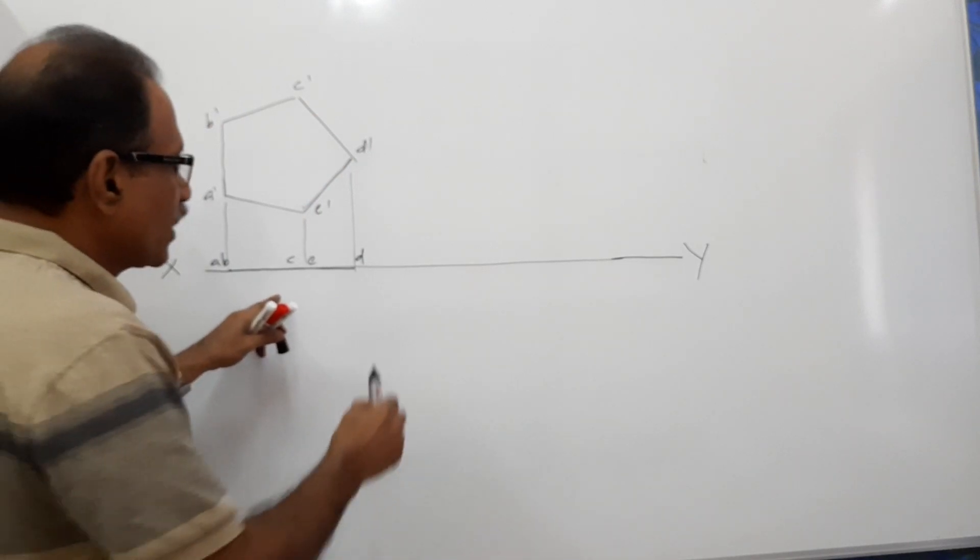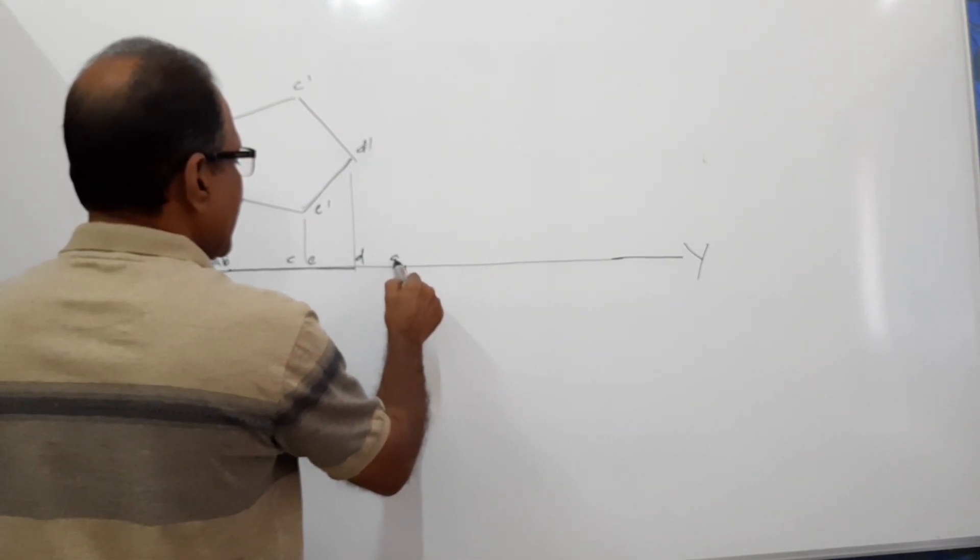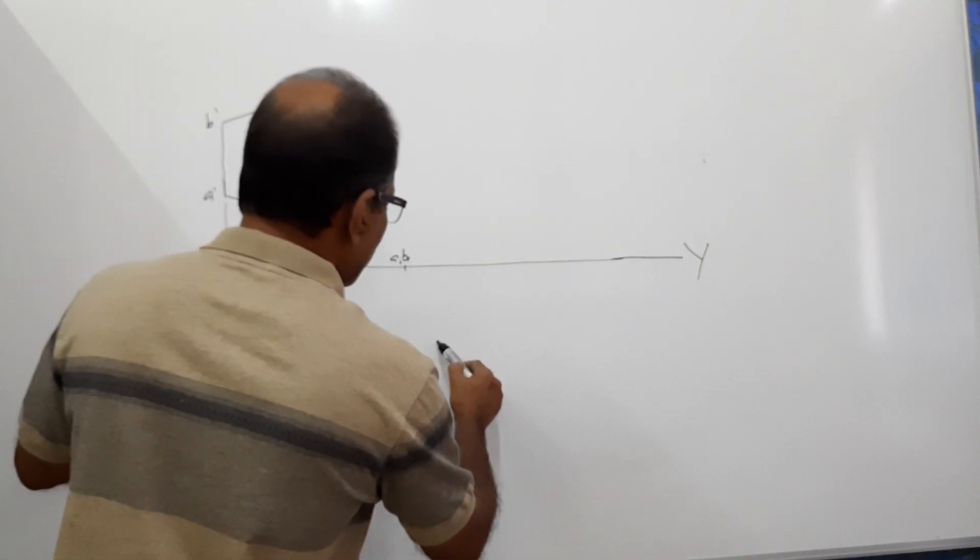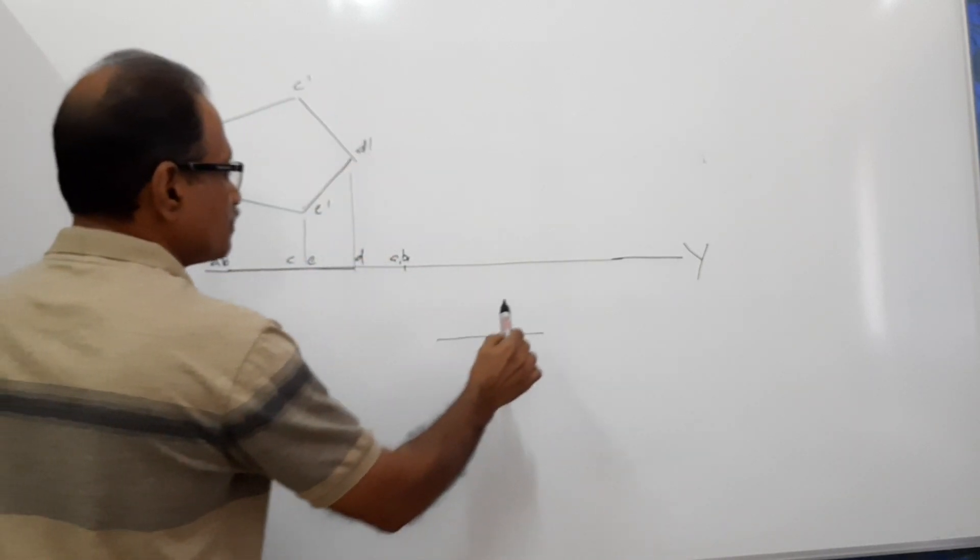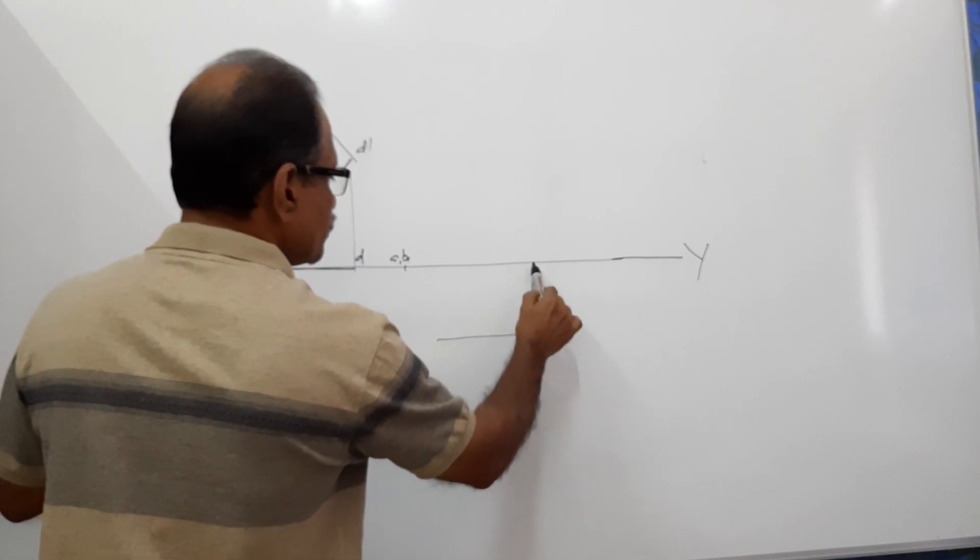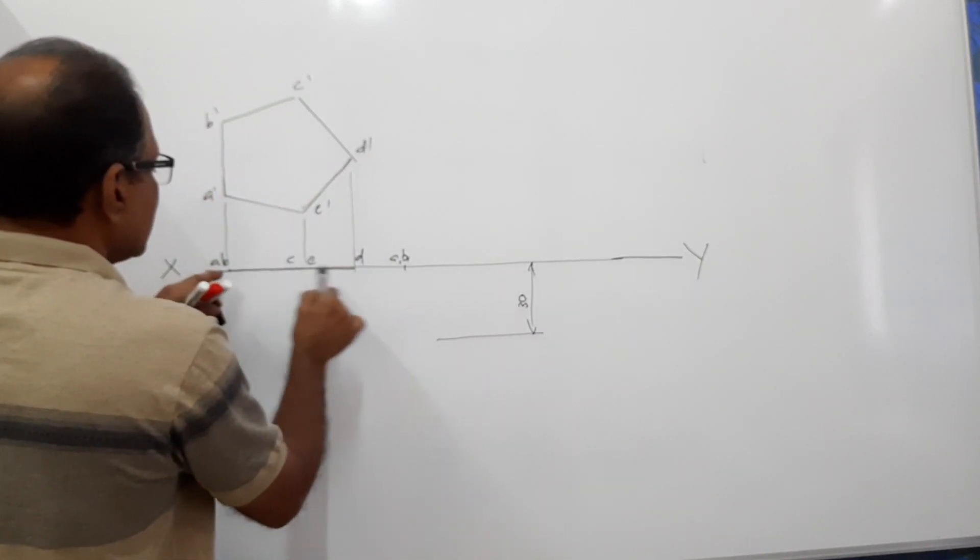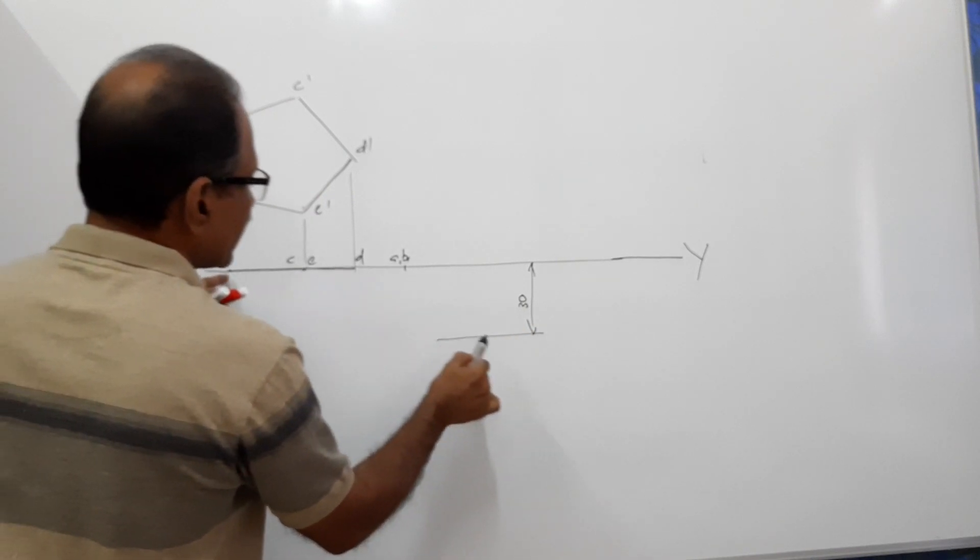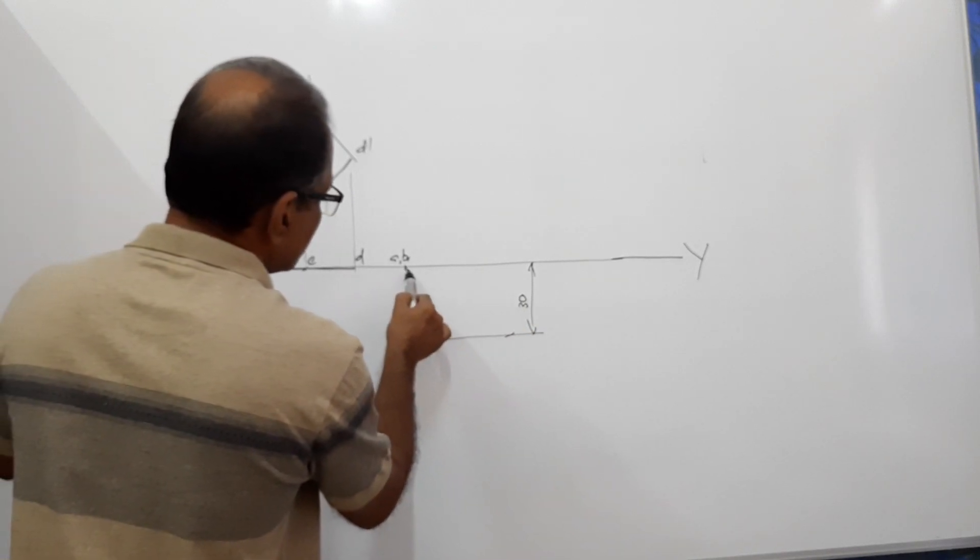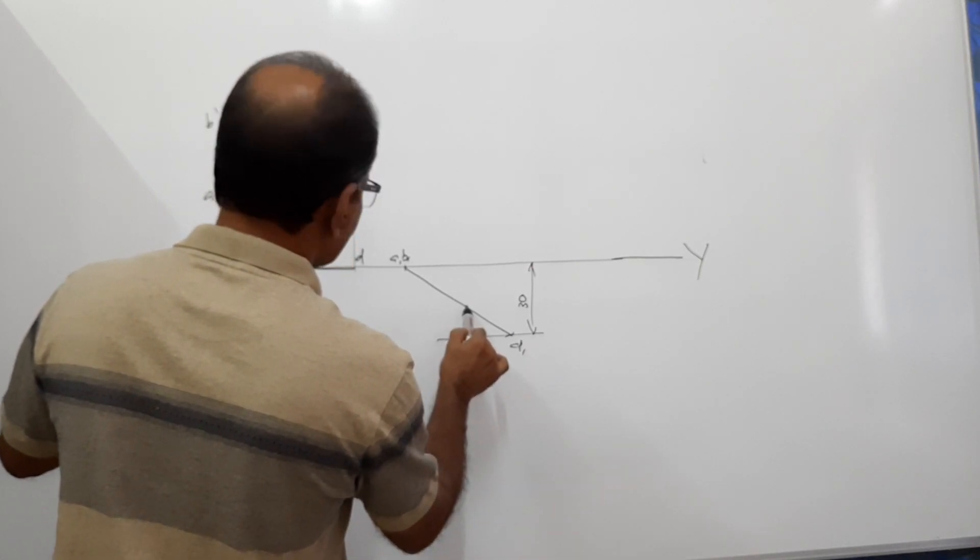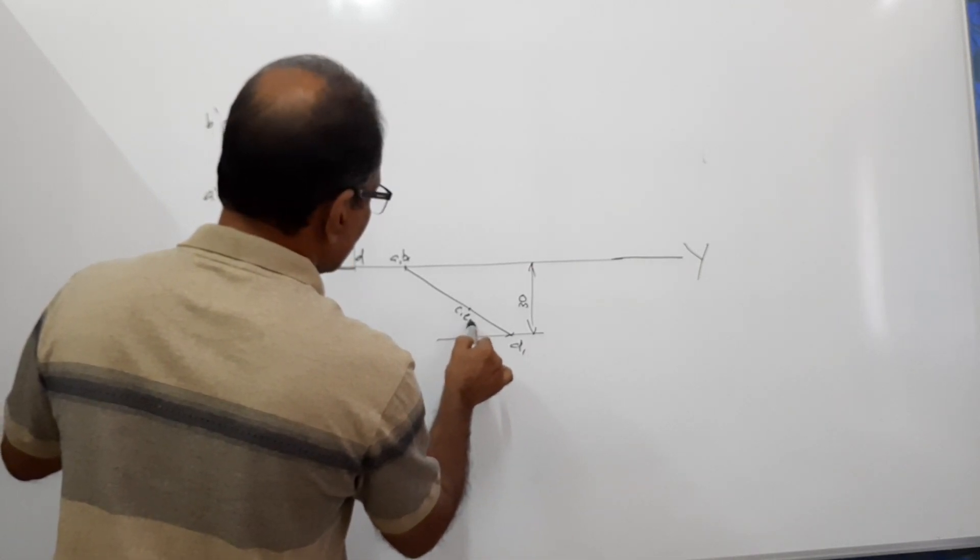The plan will be same. So I will take A1, B1 anywhere on XY. At 30mm below, I draw a horizontal line. Take this length and cut it up. D1, C1, E1.